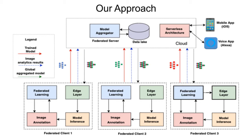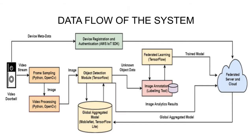It solves two problems. First, it trains the model locally and then uploads the model parameters to a centralized server for aggregation. Thus, it prevents data leakage as sensitive data does not leave the smart doorbell device. Second, it reduces communication cost as the device uploads the trained model parameters to the centralized server instead of the images.